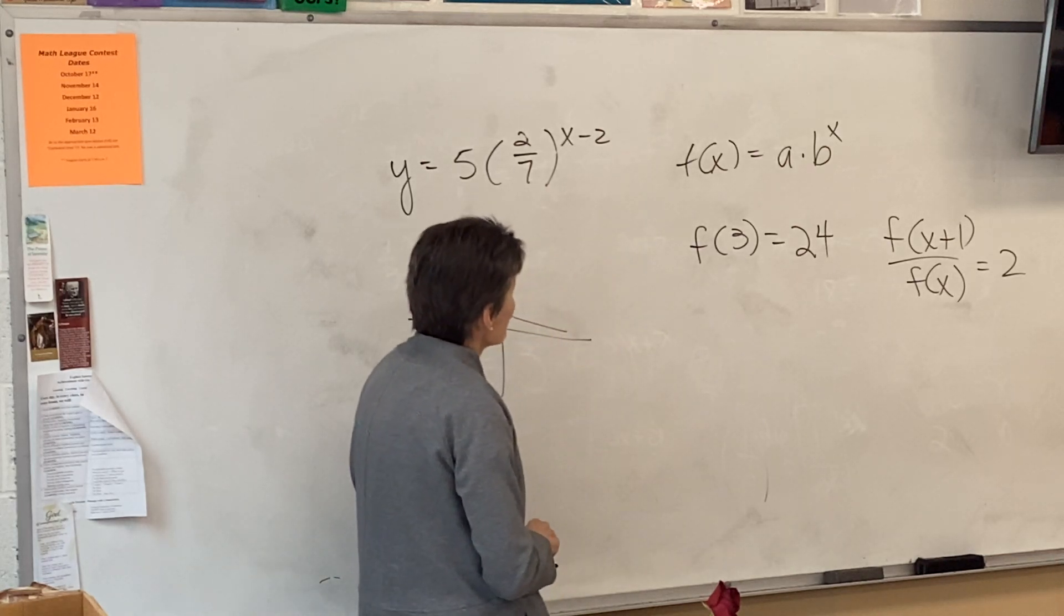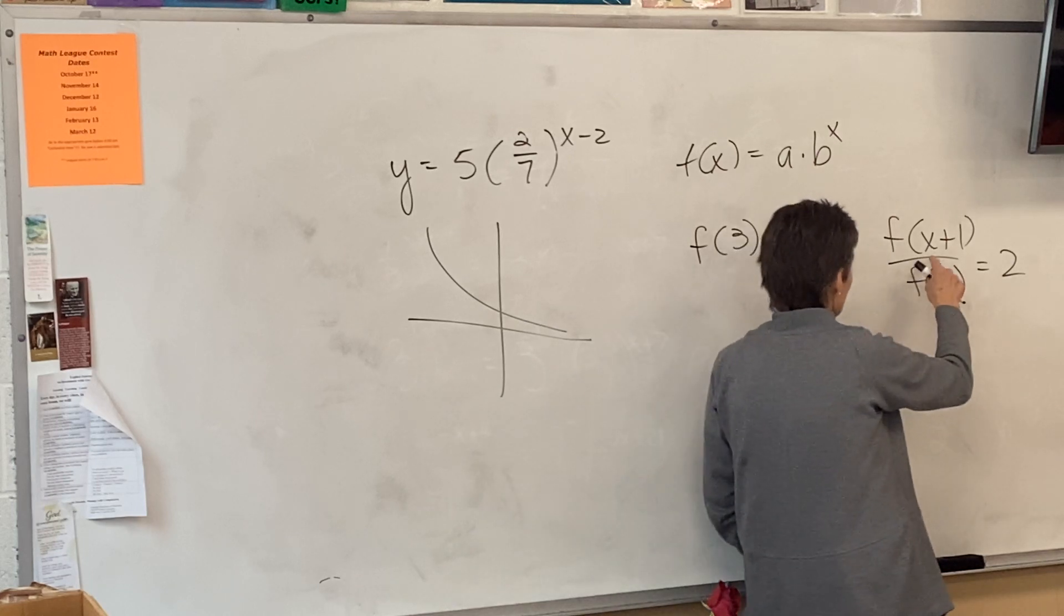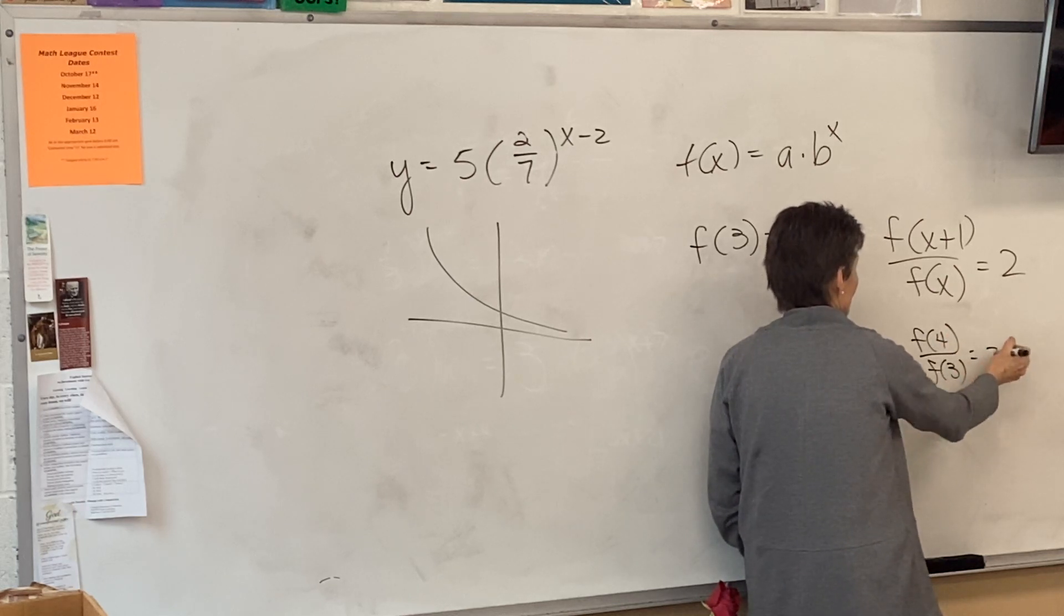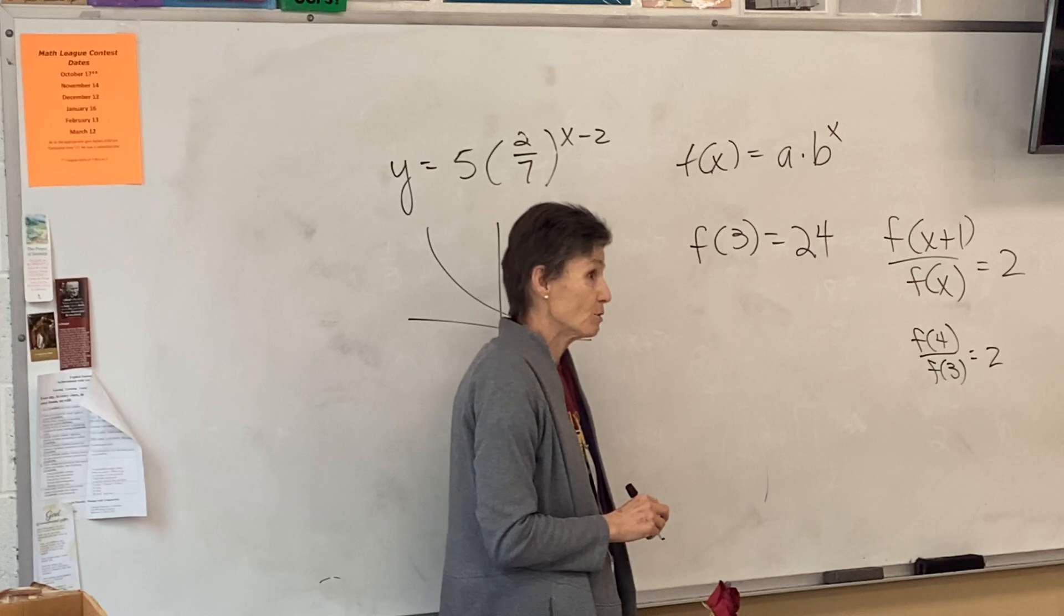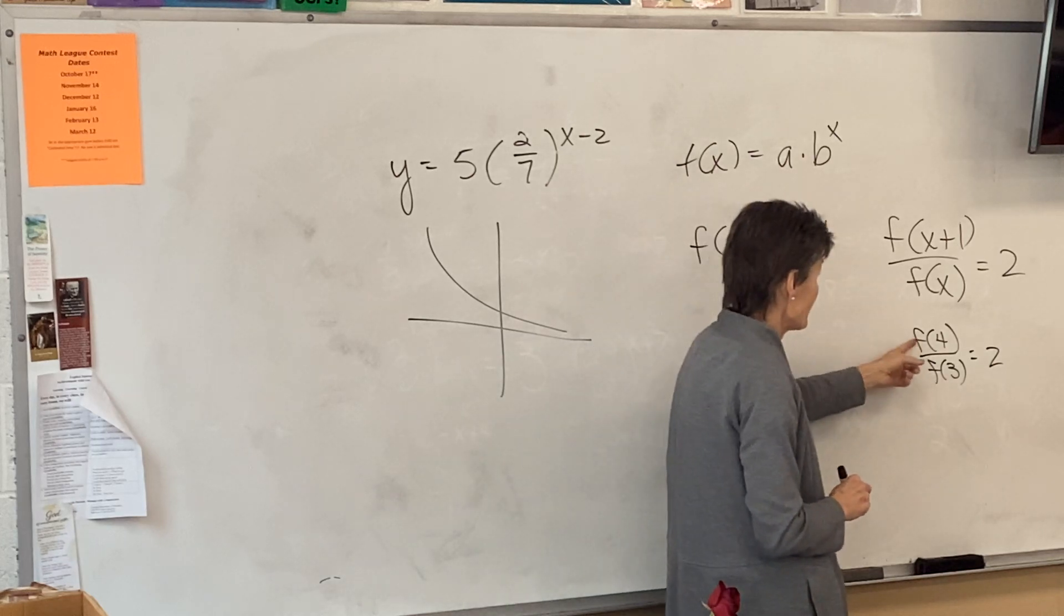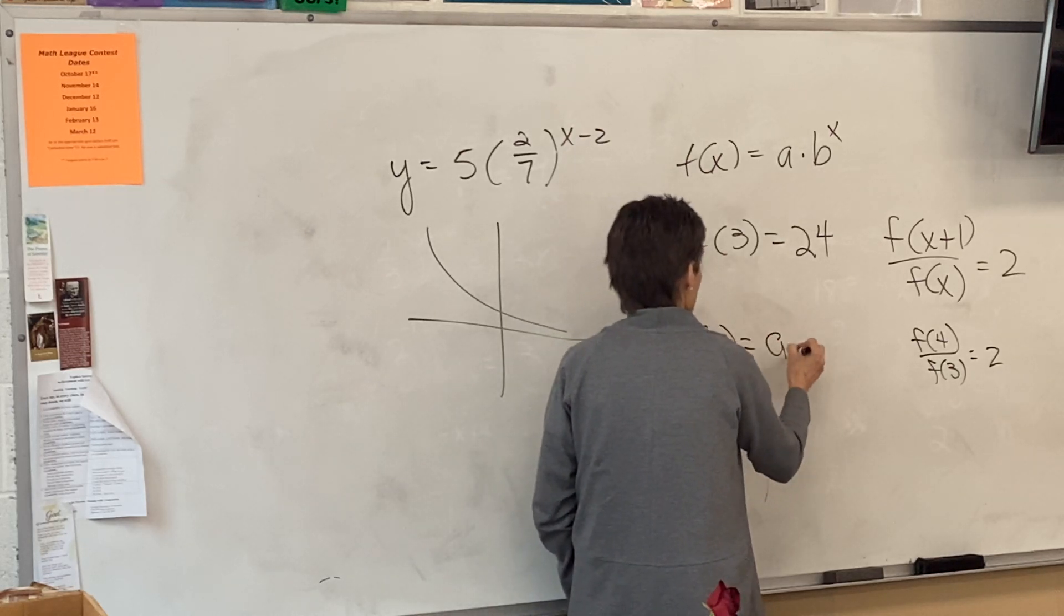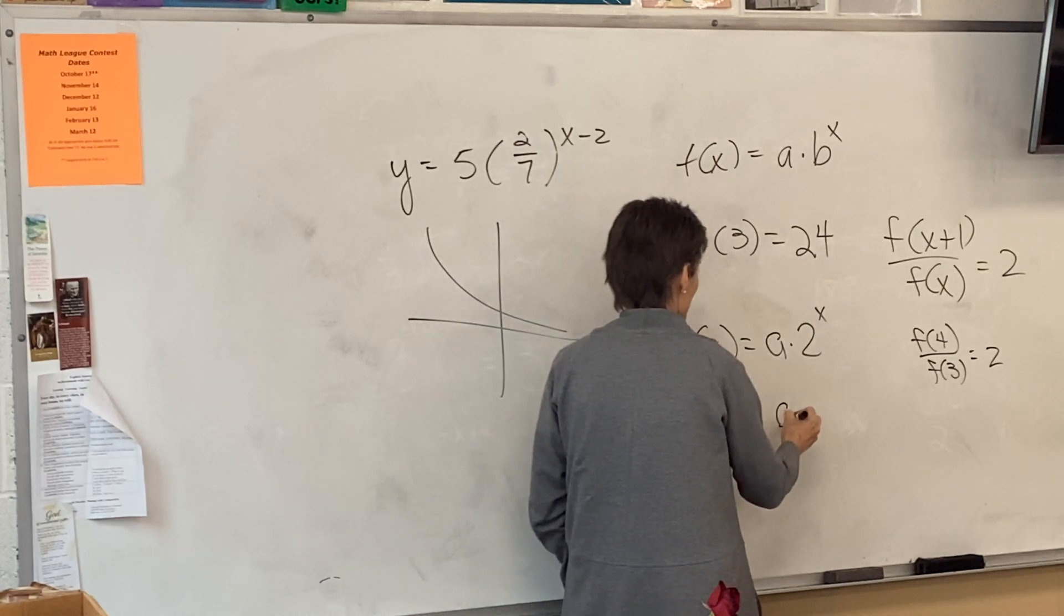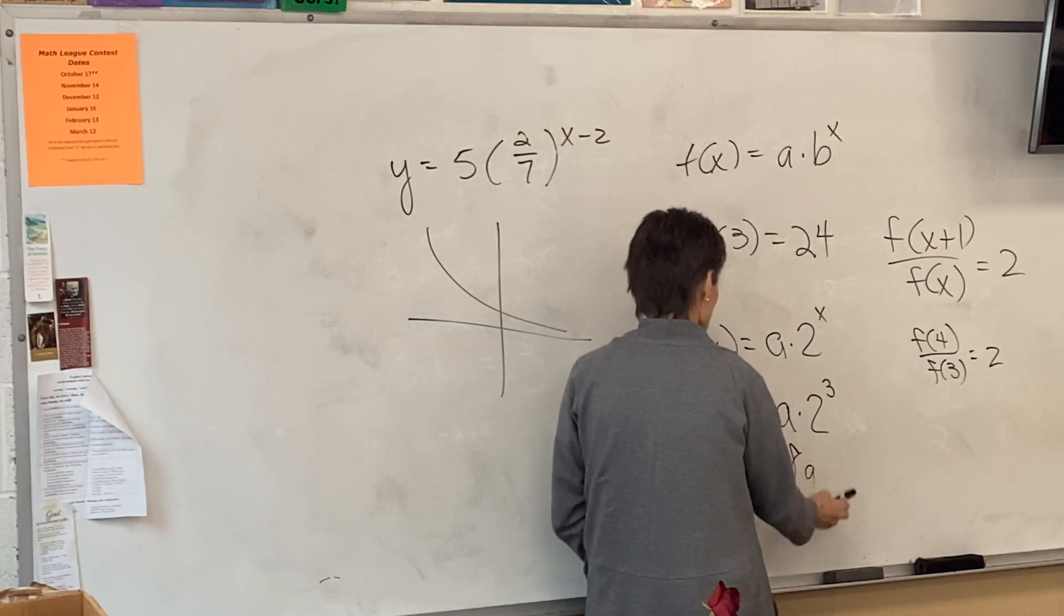All right, so what does this mean? What is happening? It's an exponential. And I know f of 3 is 24. And I know if I divide, this is like f of 4 divided by f of 3, for example. What does that tell me? It tells me the ratio of consecutive terms is 2, which means b is 2. That means to get from this term to this term, I multiply by 2. So now I know that my equation looks like a times 2 to the x.